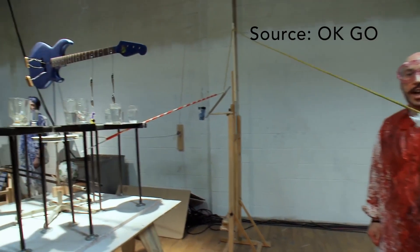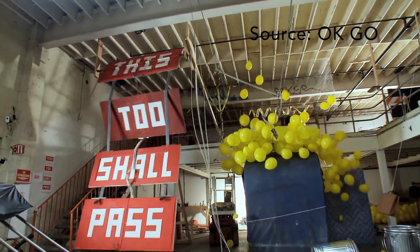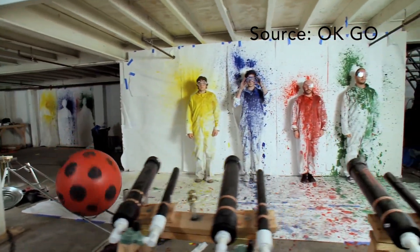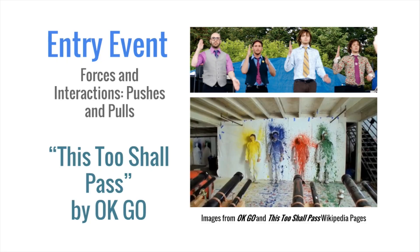It captures a working Rube Goldberg machine in one unbroken video shot that ultimately triggers small cannons to shoot paint on the band, and all this while synchronizing with the song. You can find the link to the music video in the description below. The creativity and preciseness of this machine would grab the interest of the students and motivate them to make their own.